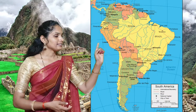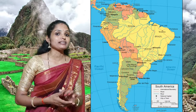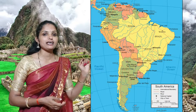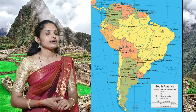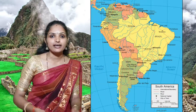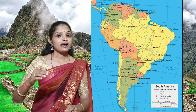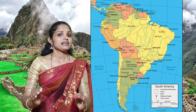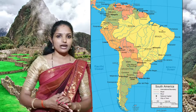South America is similar to a triangle shape. In the north side we can see the broad border and in the south side we can see it tapers. This is the location of South America.